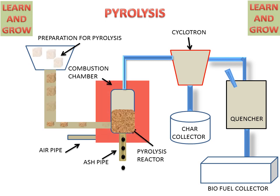From the reactor, some ash particles are created from the biomass and collected in the ash chamber. Gas is then liberated from the biomass and travels to the cyclone. The cyclone rotates the gas, and char particles are collected in the char collector.